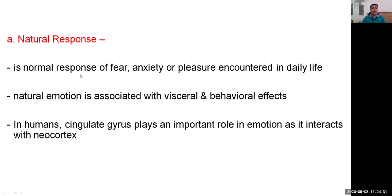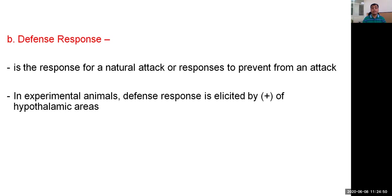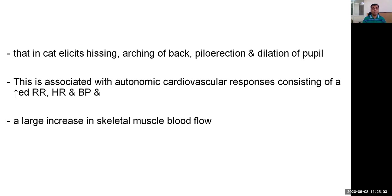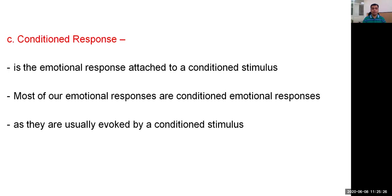A natural response is a normal response of fear, anxiety, or pleasure encountered in daily life, associated with visceral as well as behavioral effects. In humans, the cingulate gyrus plays a very important role in emotion. A defense response is the response to a natural attack or to prevent an attack. In experimental animals such as cats, defense response elicits hissing, arching of the back, piloerection, and pupil dilation, associated with increased heart rate, blood pressure, and respiratory rate. A conditioned response is the emotional response attached to a conditioned stimulus, and most of our emotional responses are conditioned responses evoked by conditioned stimuli.